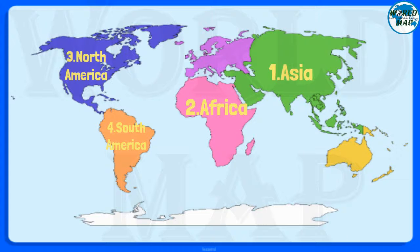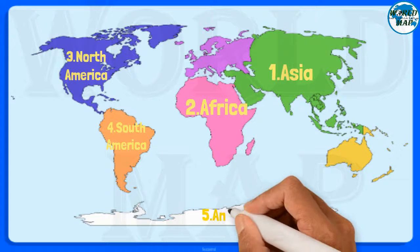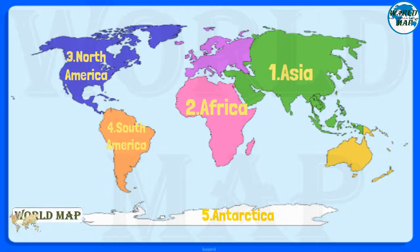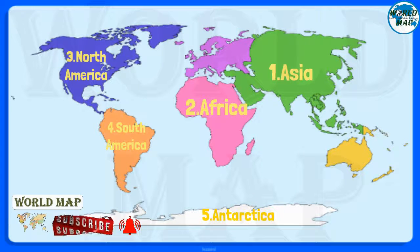Number 5: Antarctica. It is the fifth largest continent on Earth with no countries and no permanent human habitation. However, the continent has permanent human settlements where scientists and support staff live on a rotational basis.